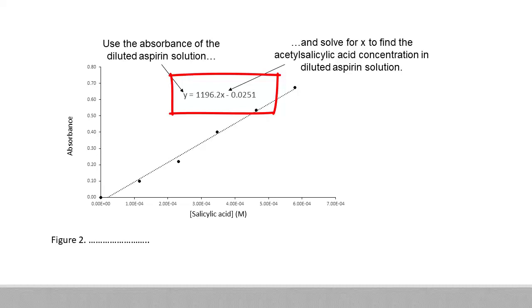The equation of the line will help you find the equivalent concentration of acetylsalicylic acid in the diluted aspirin sample. Note that you should not use the slope and intercept values given in this diagram. You need to use Excel's trendline function to give your own graph's intercept and slope.